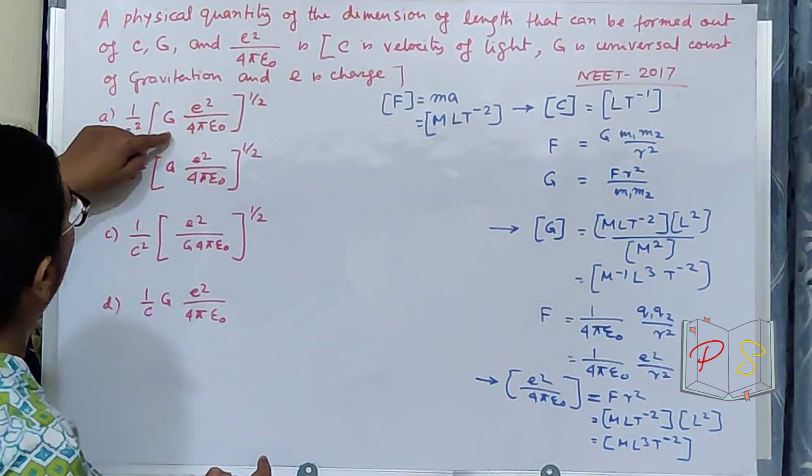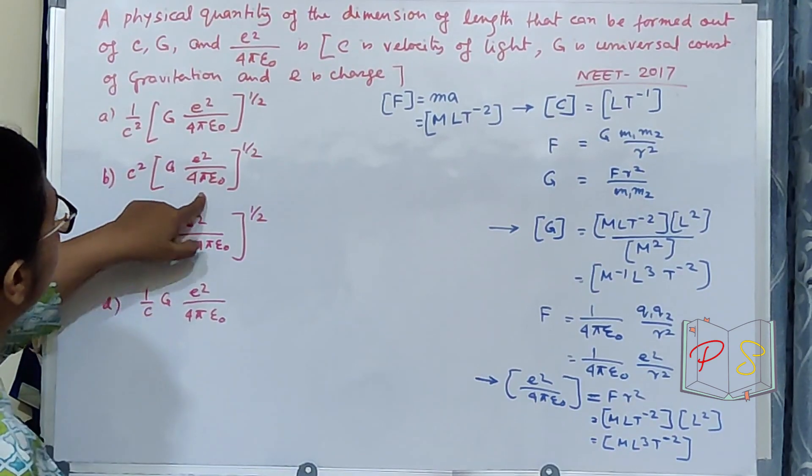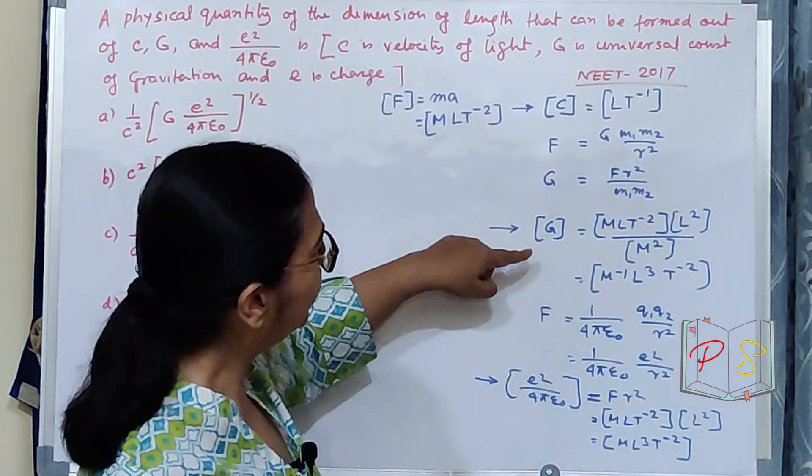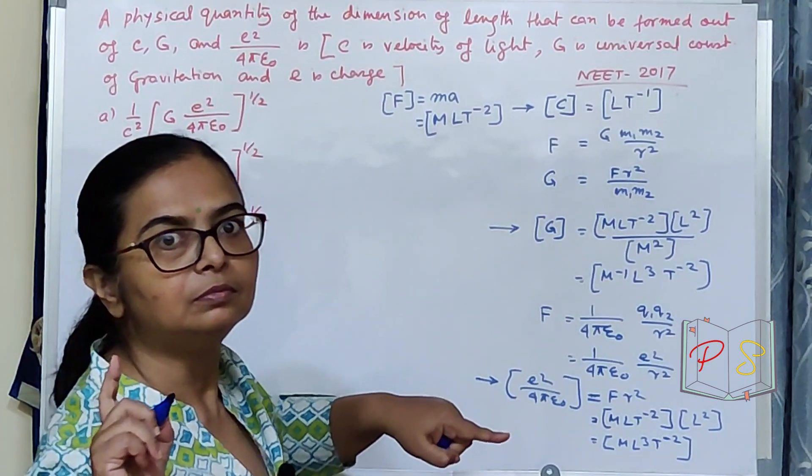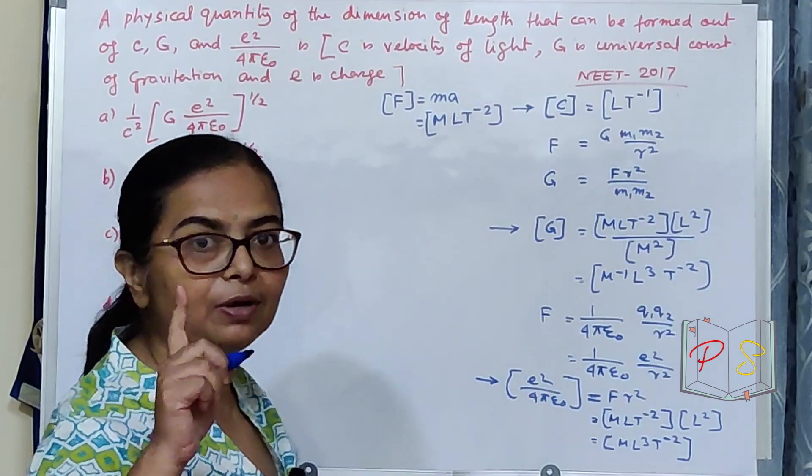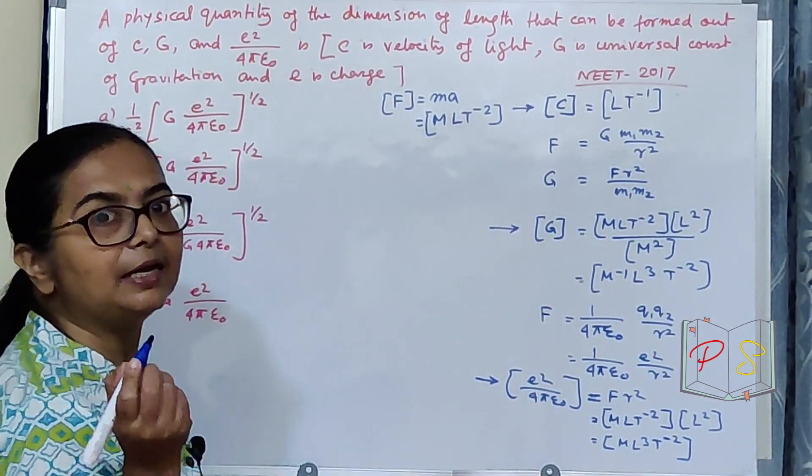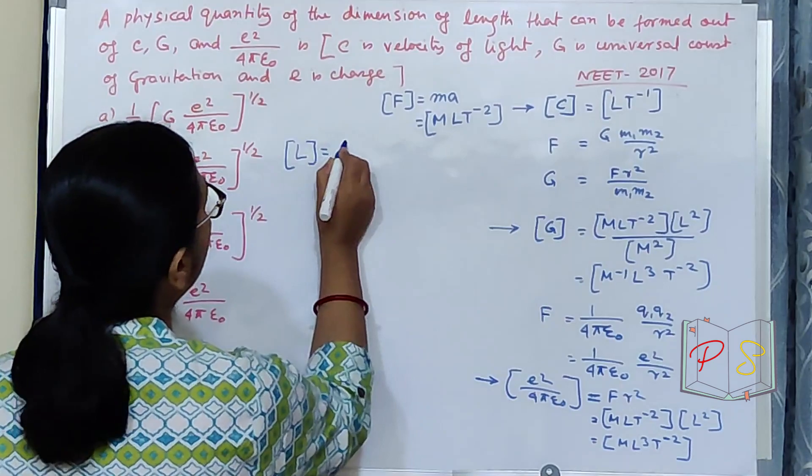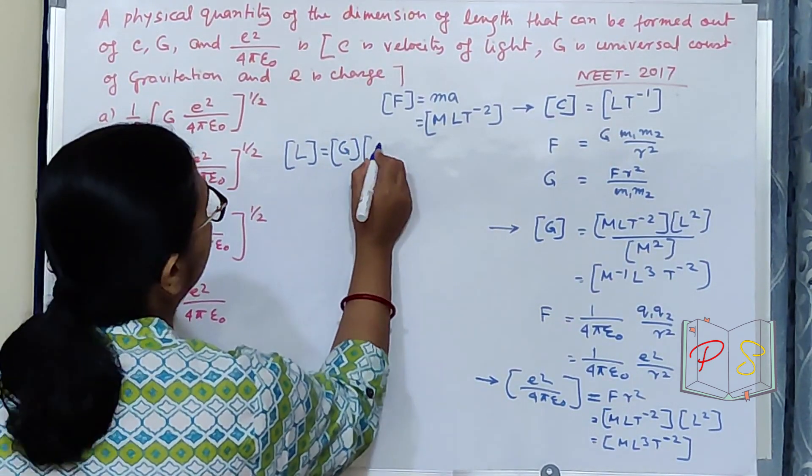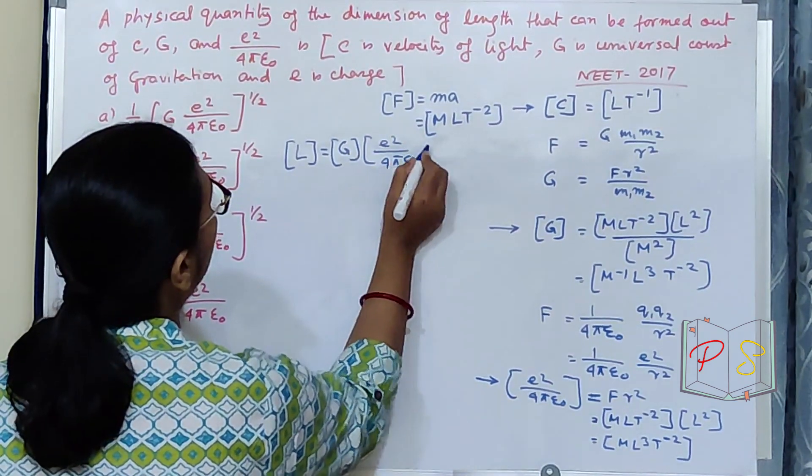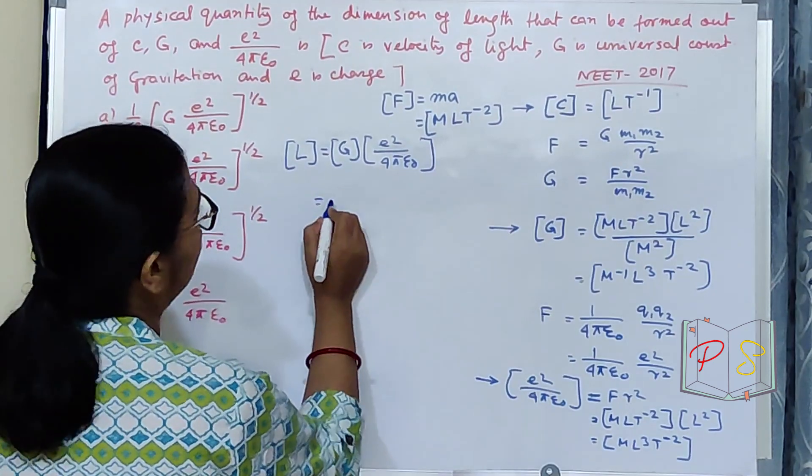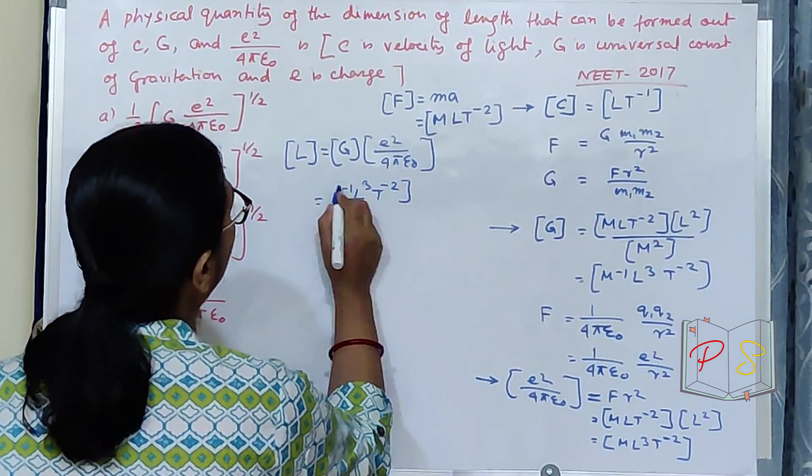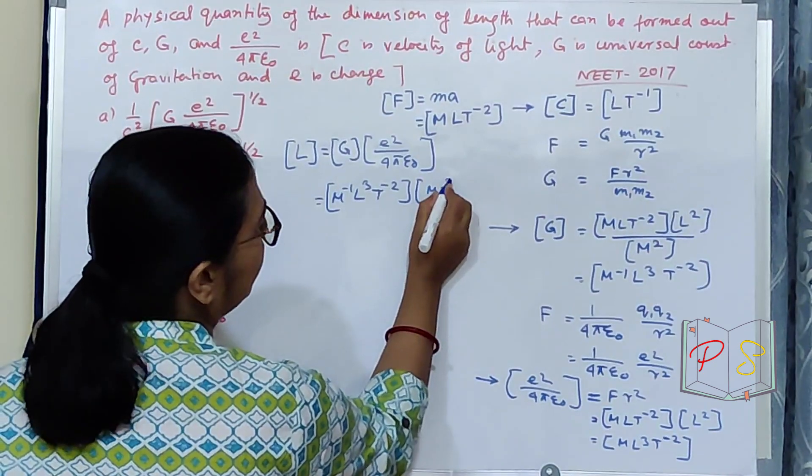Now, just see the options. One case, two case, three case, G into this thing. Here I have M minus 1, here I have only M. So, if we multiply these two my M will go. I do not require M because I need only L. I need my requirement is to find the dimension of L. So, L I require. If I multiply G and E square upon 4 pi epsilon naught I have seen my M will go. So, let us do that.